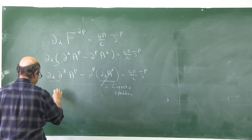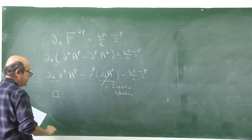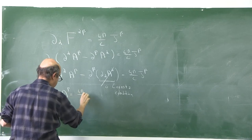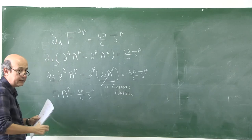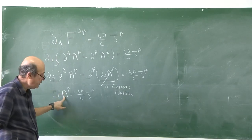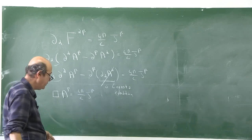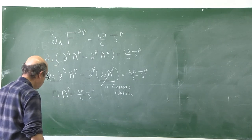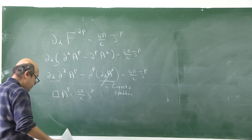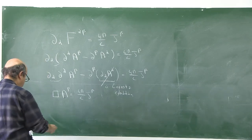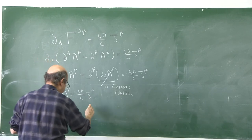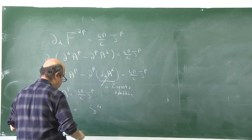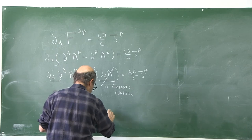The operator □ is the four-dimensional Laplace (d'Alembertian) operator. At the end, we will find the four-potential by solving this non-homogeneous wave equation with the four-current density on the right-hand side. The standard method is to treat the right-hand side as a source in the form of a delta function, so we define the four-dimensional delta function δ⁽⁴⁾(x − x') on the right-hand side.